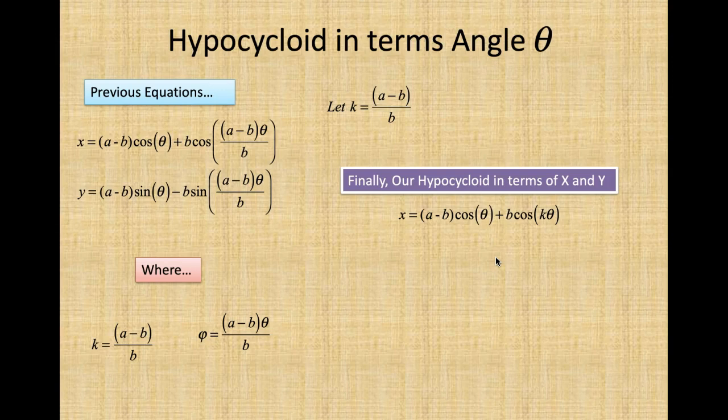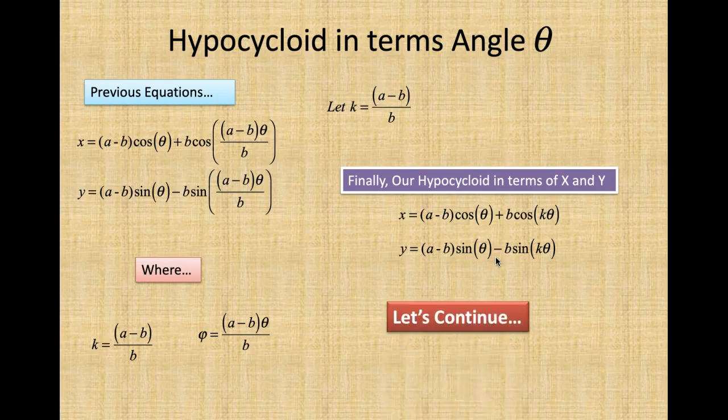And finally, our hypocycloid in terms of X and Y is equal to (A minus B) cosine theta plus B times cosine K theta, and Y is equal to (A minus B) sine theta minus B times sine K theta. So now we have both of our equations in terms of X and Y and in terms of theta.